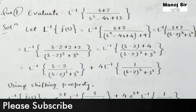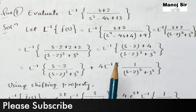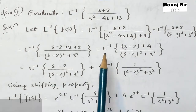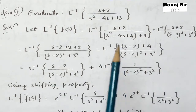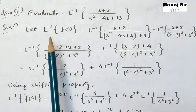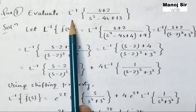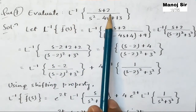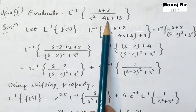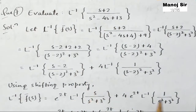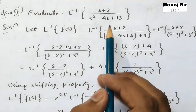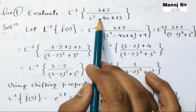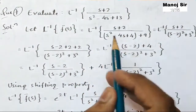Welcome to video number 25. In this video we are going to solve the seventh problem on the topic inverse Laplace transform. The question is: evaluate the inverse Laplace transform of (s + 2) upon (s² − 4s + 13). Here we need to make the denominator part in the form of (a − b) whole square.